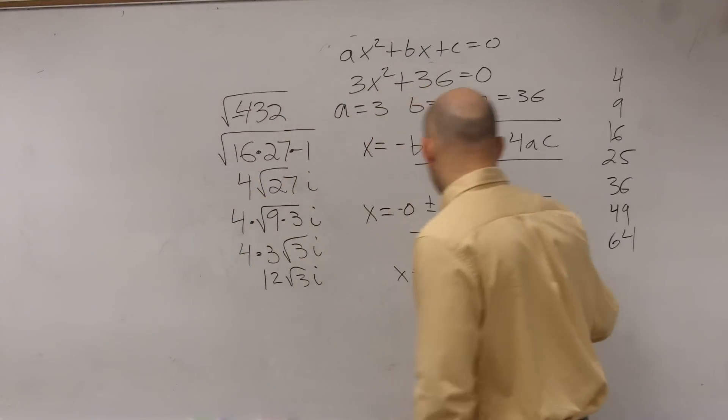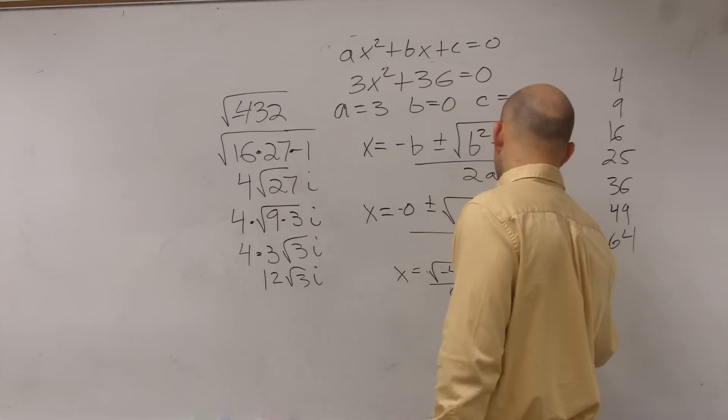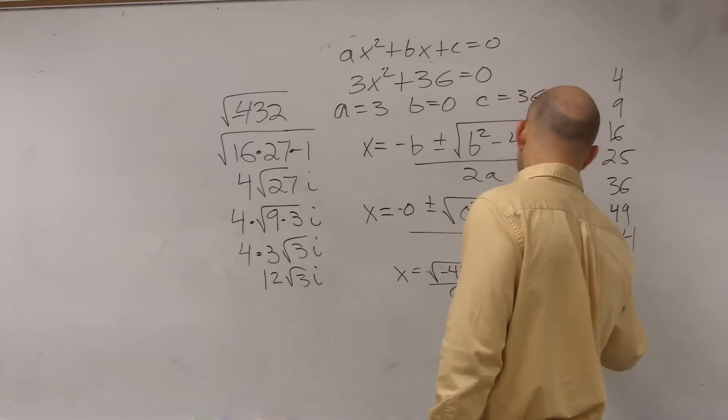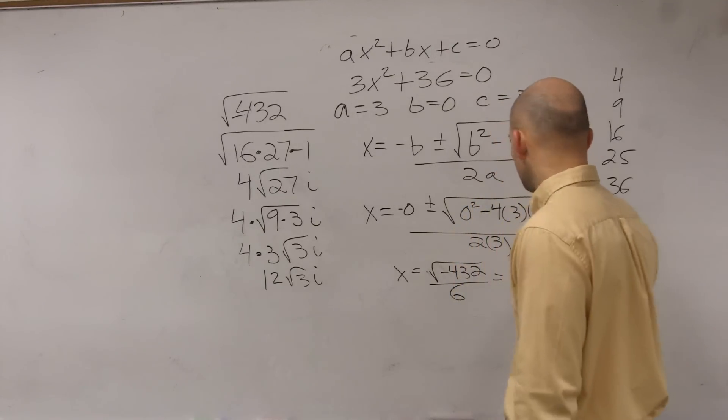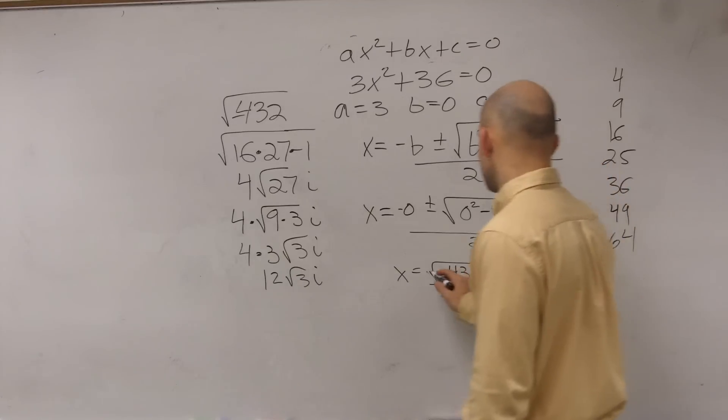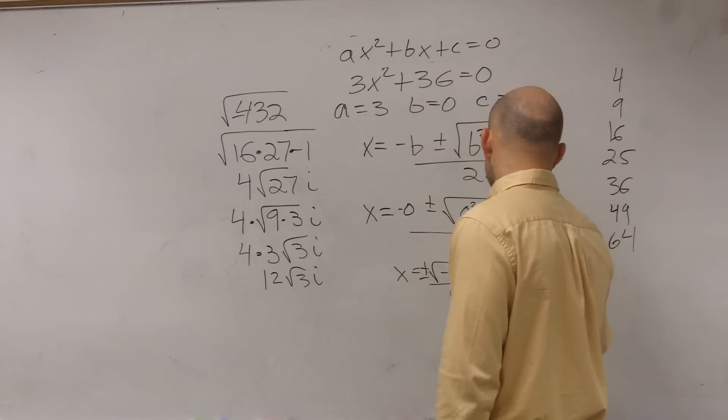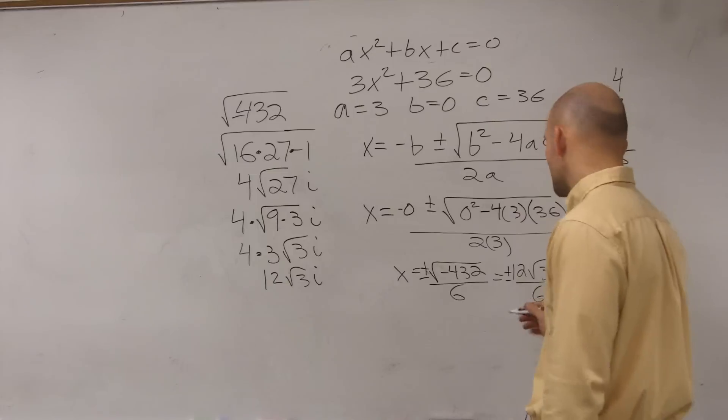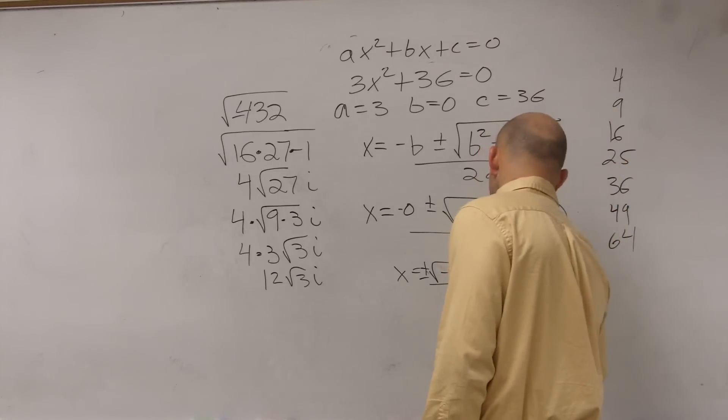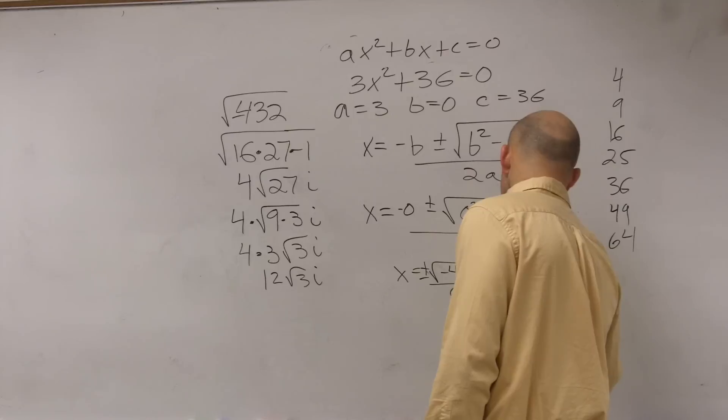So therefore, I can rewrite this as 12 square root of 3i over 6. This is plus or minus. So therefore, 12 divided by 6 is 2. So my final answers are x equals plus or minus 2 square root of 3i.